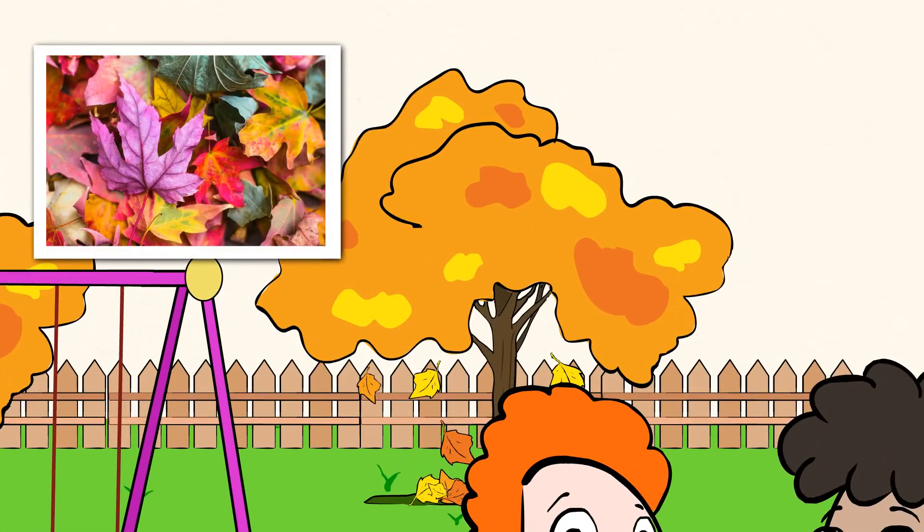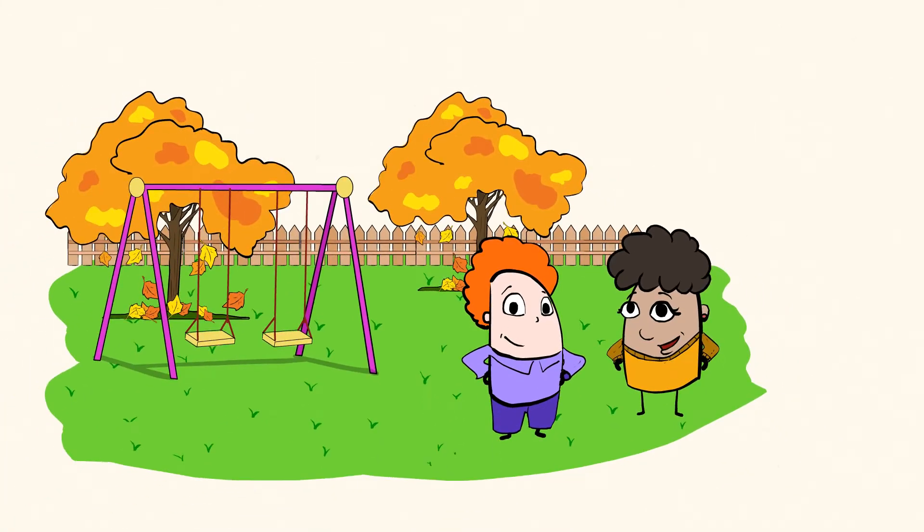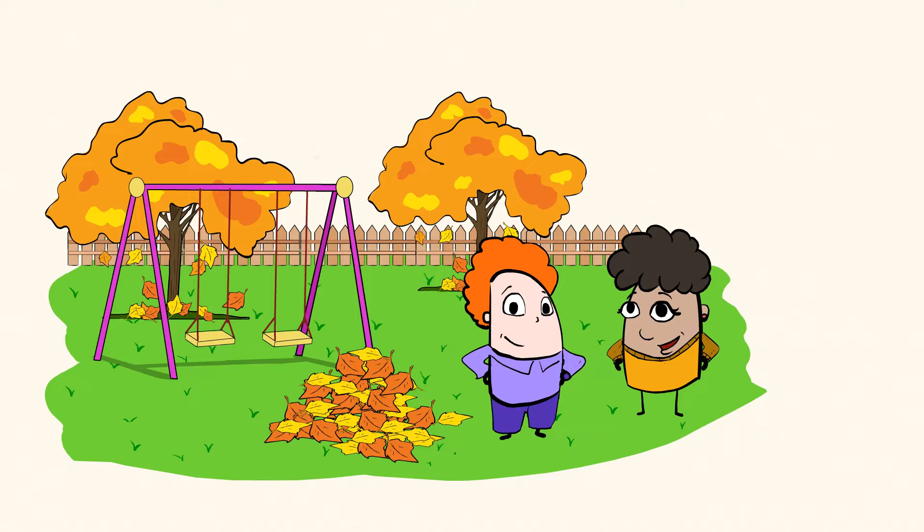It looks like the leaves on the trees have changed from green to all sorts of other colors. There are yellow, red, orange, and brown leaves everywhere. Many have fallen off and are on the ground. Looks like the perfect place to make a giant leaf pile to jump into! We can see that people are wearing long sleeves, pants, and even some jackets.